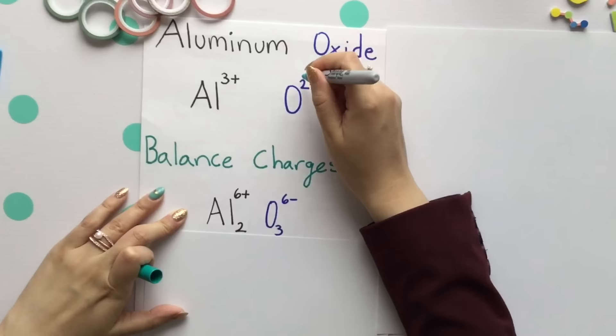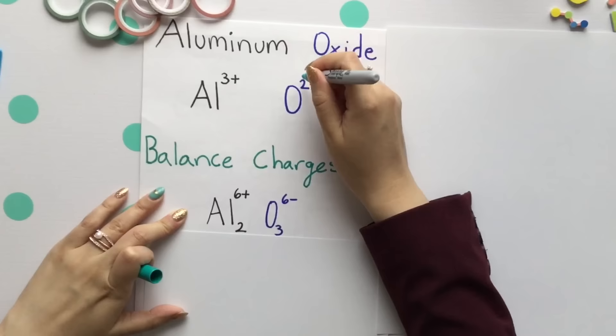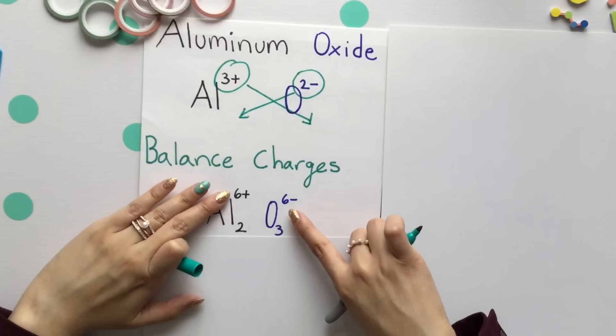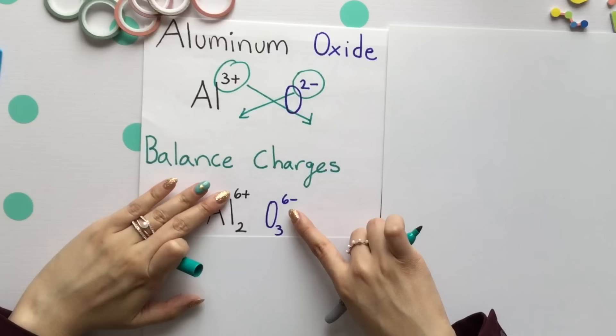Another way of looking at this is to lasso our charges where aluminum gets that 2 and oxygen gets the 3. They get the opposite charges of each other so they can make the same exact charge.